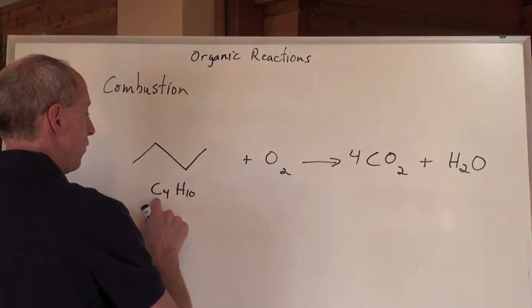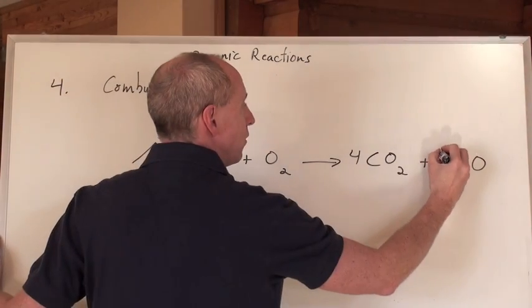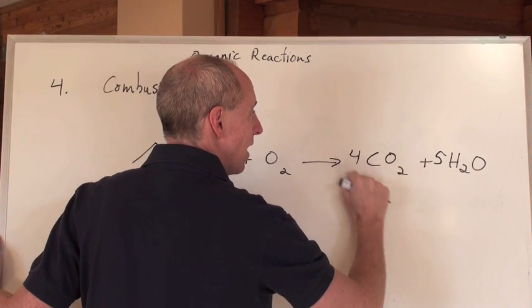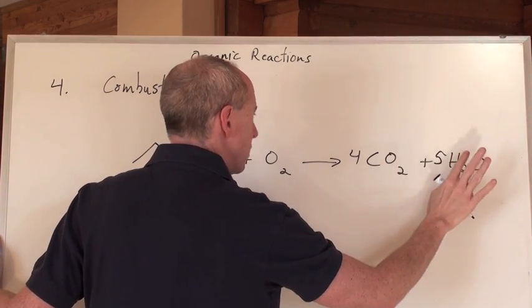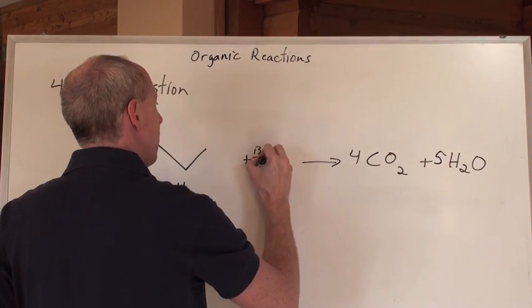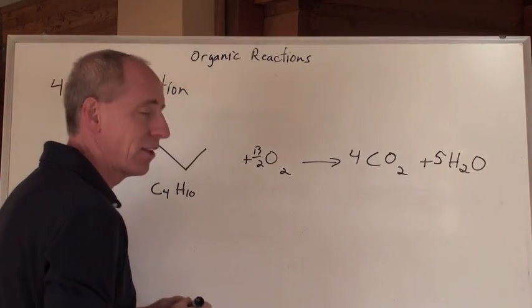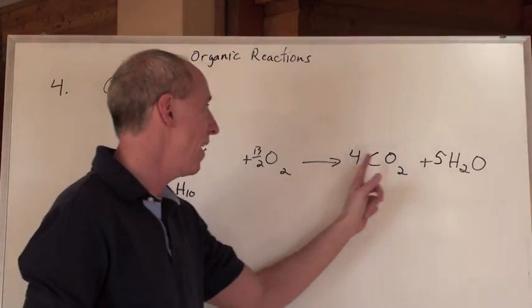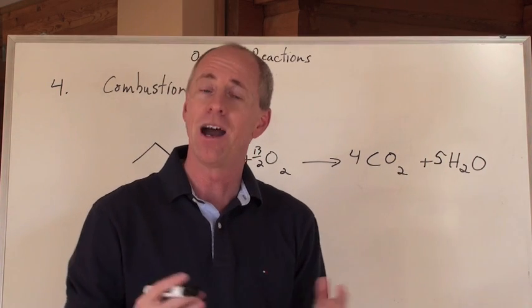So when you balance that, you're going to have 4 of those right there because you have 4 there. You've got 10 hydrogens there. You're going to put a 5 there. Stay on this side. 4 times 2 is 8 plus 5 is 13. So 13 halves go here. And remember, chem guy says that's cool, but if your teacher doesn't, it's going to be 2, 13, 8, and 10. Hydrocarbon combustion.